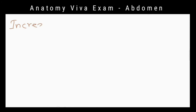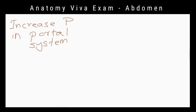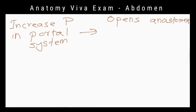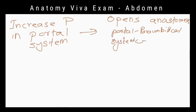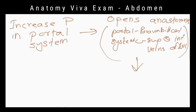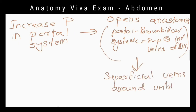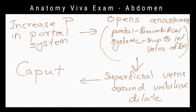How does it occur in portal hypertension? There is a portosystemic anastomosis between para-umbilical veins, which are tributaries of the portal vein, and superior and inferior epigastric veins, which are tributaries of the inferior vena cava. Increased pressure in the portal system opens this anastomosis, so superficial veins around the umbilicus get dilated and appear as Caput Medusae.